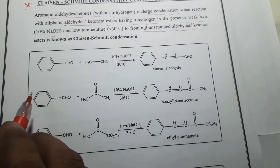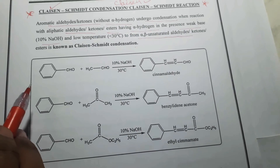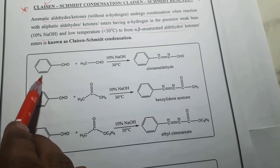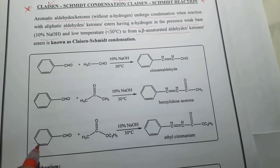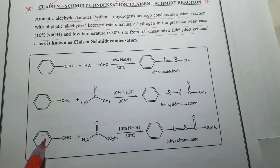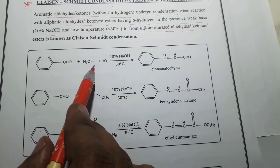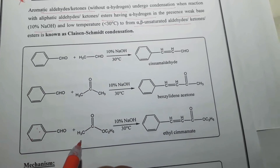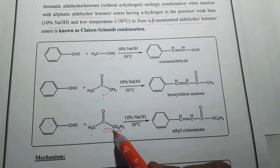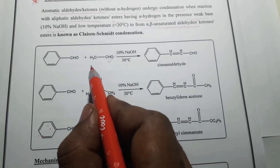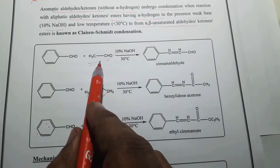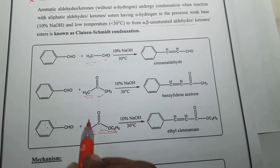Here you can observe the general reactions related to Claisen-Schmidt condensation. Benzaldehyde is the aromatic aldehyde compound with no alpha-hydrogens. It undergoes condensation with aliphatic aldehydes, ketones, or esters — all of which must contain alpha-hydrogens. You can observe the aliphatic aldehyde, aliphatic ketone, and aliphatic ester each consisting of alpha-hydrogens.